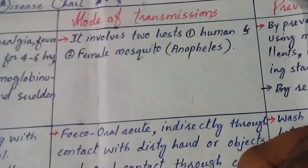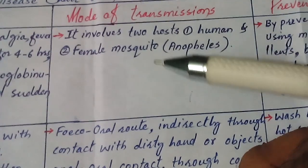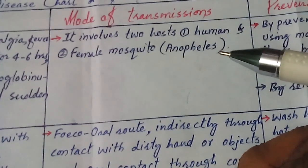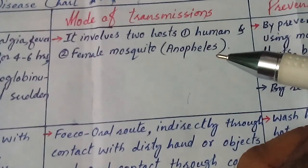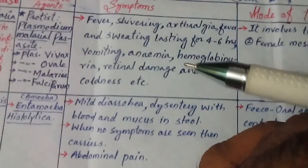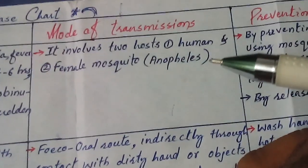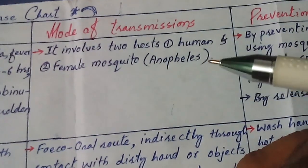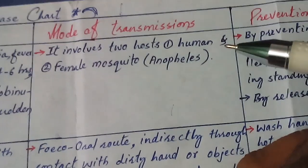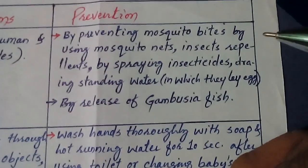The mode of transmission of this protist requires two hosts. One host is the female Anopheles mosquito. The Plasmodium vivax protist spends some stages of its life cycle inside the body of this female Anopheles mosquito. When this mosquito bites a human body, the parasite enters the human body and infects the normal person.